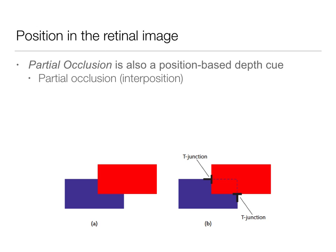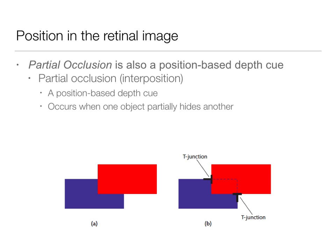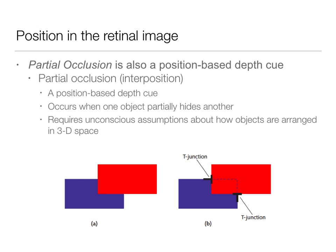Partial occlusion, also called interposition, is a position-based cue. It occurs when one object partially hides another and requires an unconscious assumption about how objects are arranged. When we look at a red rectangle overlapping a purple rectangle, it doesn't look like a blue B-shape behind it — it looks like the red rectangle is on top of the purple one. We use T-junctions to determine that the red object is closer than the purple object, giving us information about that 3D space even from 2D retinal positions.